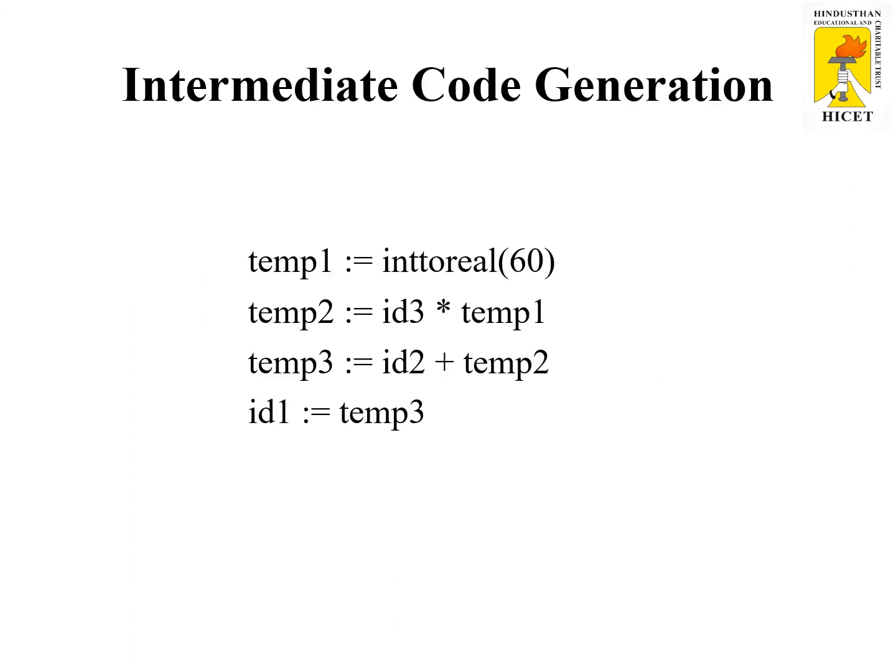Intermediate code generation is the fourth phase of the compiler. The input for the intermediate code generator is the semantic analysis parse tree, and the output is intermediate code. The intermediate code consists of a number of temporary variables. One type of intermediate representation is 3-address code — any programming line that uses 3 addresses. For example: temp2 = id3 * temp1. Here, temp2 carries one address, id3 carries one address, and temp1 carries another address. This type of representation is called 3-address code.